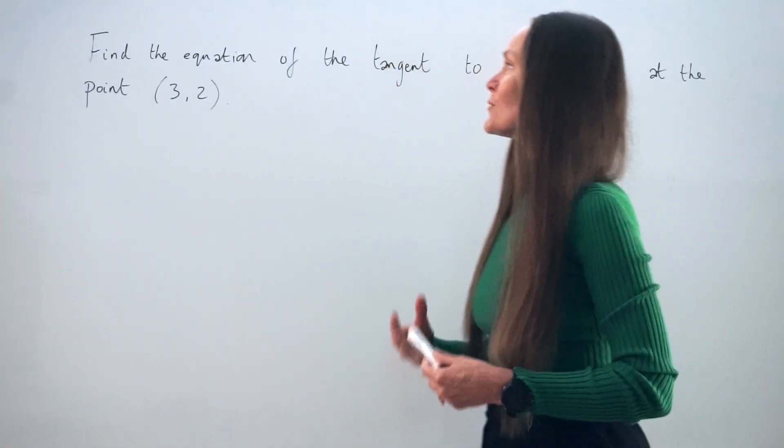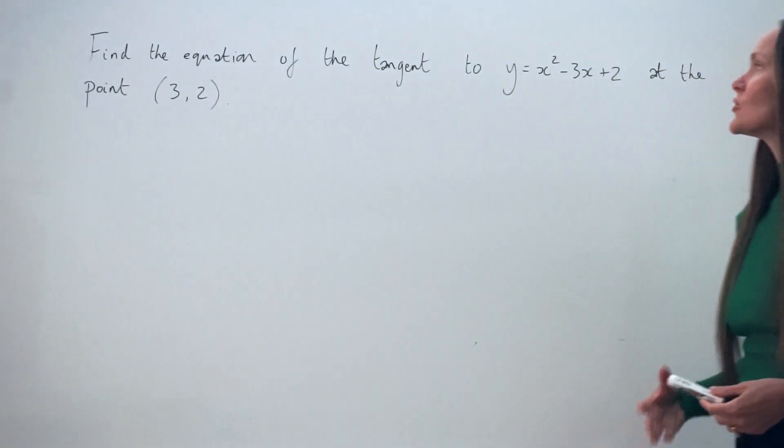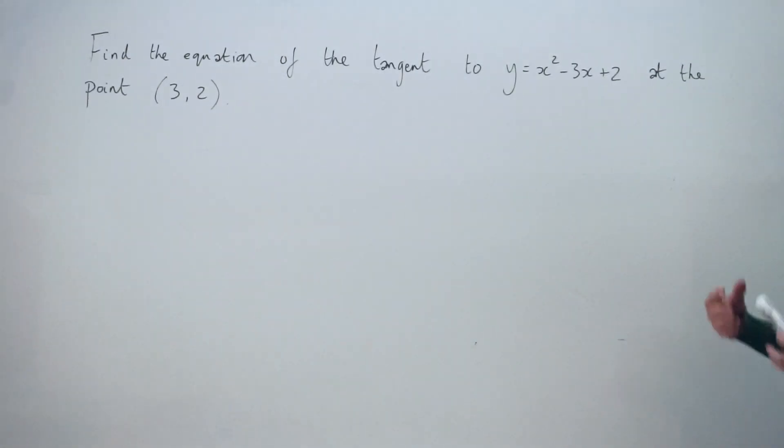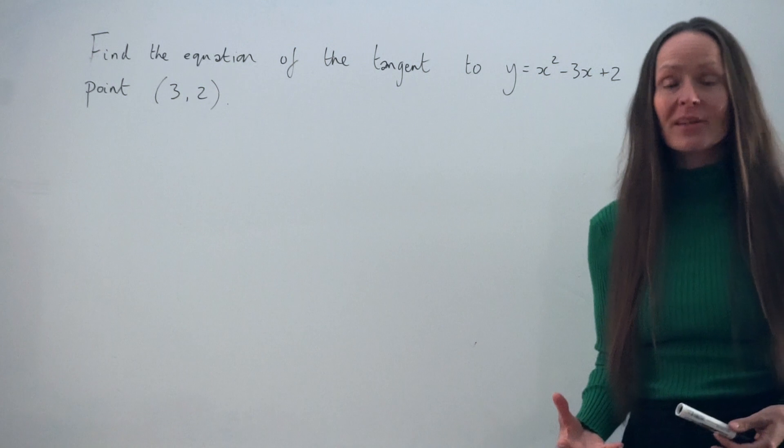Hey guys! In this question, we have to find the equation of the tangent to y equals x squared minus 3x plus 2 at the point 3, 2.